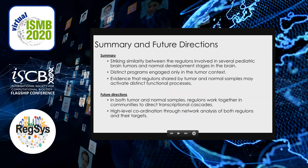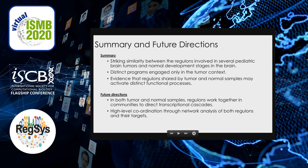To conclude, we find striking similarity between the regulons involved in several pediatric brain tumors and normal brain development stages, as well as distinct programs engaged only in the tumor context. We have seen evidence that regulons shared by tumor and normal samples may activate distinct functional processes. In the future, we will further explore how regulons work together in communities to direct transcriptional cascades, and pursue deeper understanding of this high-level coordination through network analysis of both regulons and their targets.